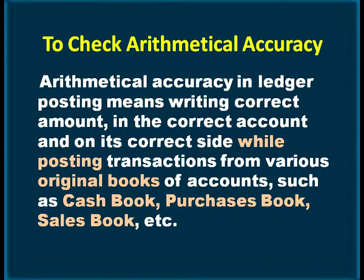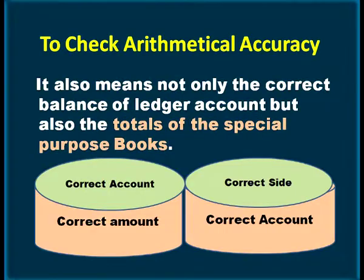Arithmetical accuracy in ledger posting means writing the correct amount in the correct account and on the correct side when posting transactions from various original books of accounts like cash book, purchases book, sales book, etc. It also means not only the correct balance of ledger accounts, but also the correct totals of special purpose books. The correct amount should be written in the correct account on the correct side to check arithmetical accuracy.